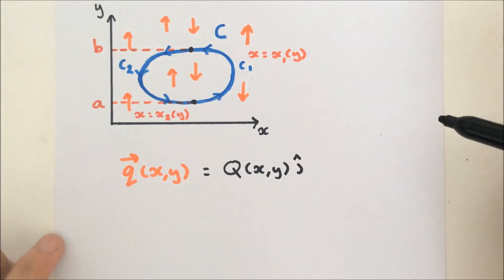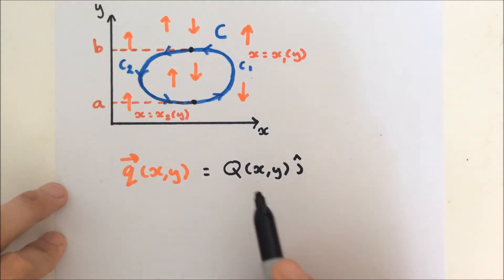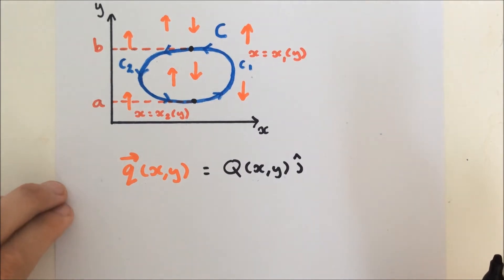So here's our function, our vector field, Q of xy, and of course, that only has y components where the i and the k components go to zero.